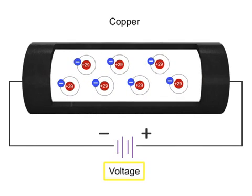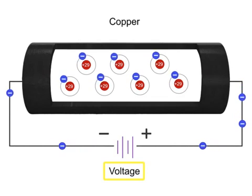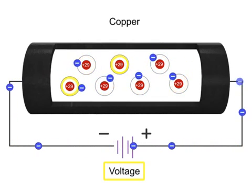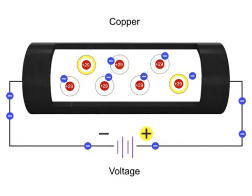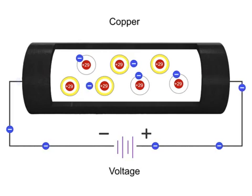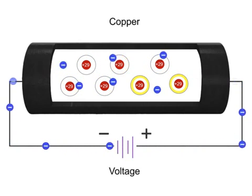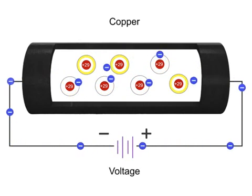When a voltage is introduced to the copper wire, the electrons can be directed through the wire with the electrons moving towards the positive end of the source voltage. This movement or flow of electrons in one direction is called electron current flow or just current.